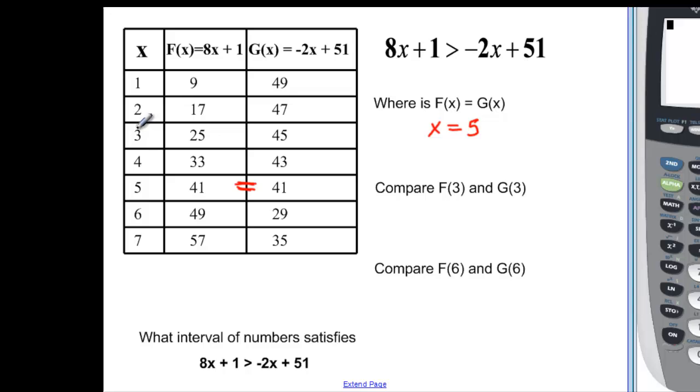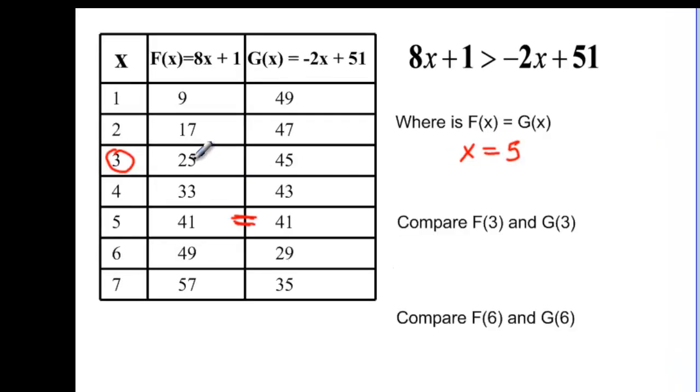Now it says compare f of 3. Well at f of 3 and g of 3 we have 25 for f of 3 and 45 for g of 3. So f of 3 is less than g of 3. So there's a less than in here. Now it asks me to go on the other side of my equal sign and look at x equals 6. So f of 6 is 49, g of 6 is 29. So now f of 6 is bigger than g of 6. So it's greater than.